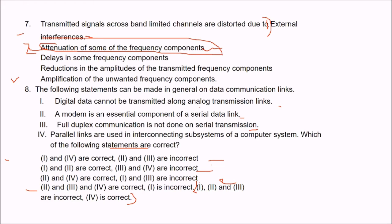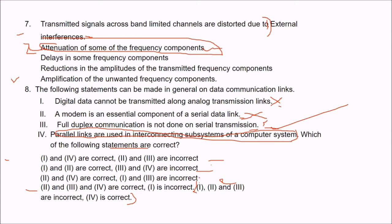Digital data cannot be transmitted along analog transmission links — not correct, because we have broadband facilities that transfer digital data over analog systems. A modem is an essential component of a serial data link — also no. Full duplex is not done on serial transmission — also wrong. Parallel links are used in interconnecting subsystems of a computer system — this is correct. So the answer is only the fourth statement is correct; statements one, two, and three are incorrect.